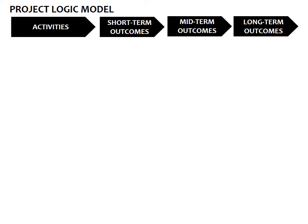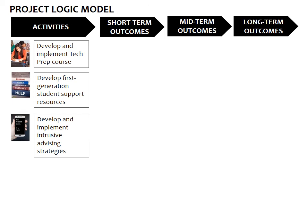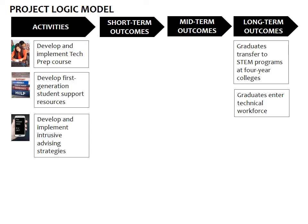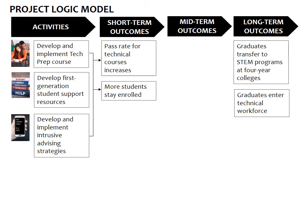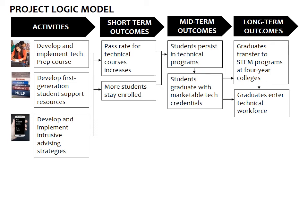In the first column, for activities, we'll put in those activities that we know are part of the project that Jen is planning. Then we'll put in the outcomes that the project is supposed to achieve, which are to increase the number of graduates who either transfer to STEM programs at four-year colleges or enter the technical workforce. Now we need to connect the activities to those desired outcomes. It's expected that the activities will lead to more students passing technical courses and staying enrolled at the college. If those short-term outcomes are achieved, the college will see more students persisting in their technical programs and graduating with marketable technical credentials, which they can use to either transfer to four-year STEM programs or enter the workforce.